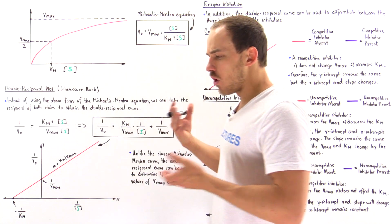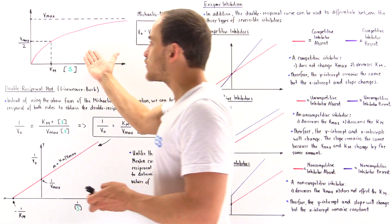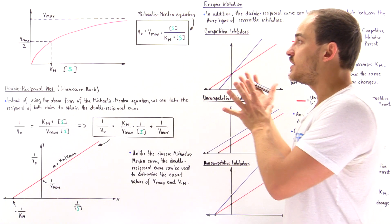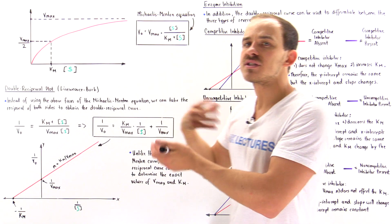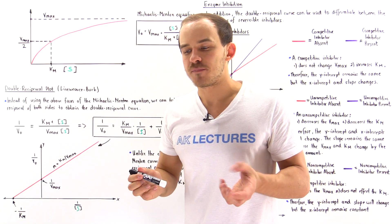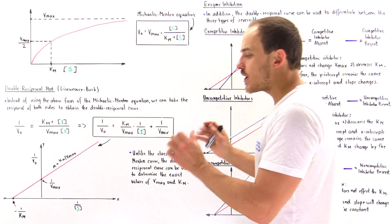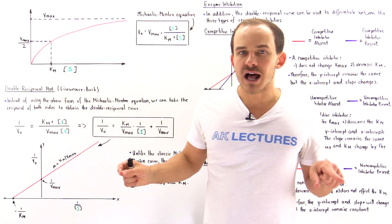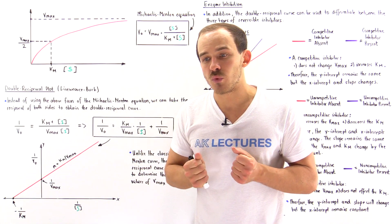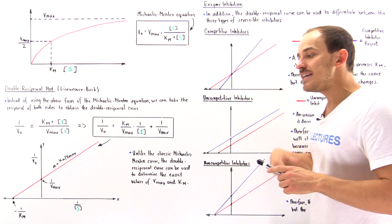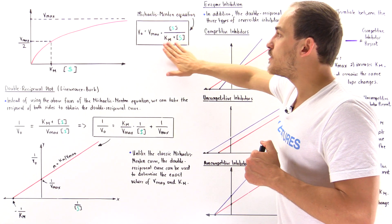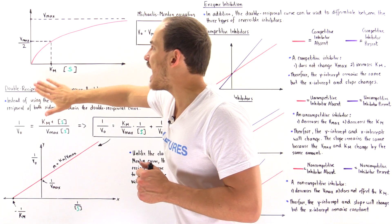Back in the day before computers, there was no way to use this graph to actually calculate Vmax and Km. So instead of using the Michaelis-Menten equation in its original form, we changed the equation into a slightly different form by taking the reciprocal of both the left and right sides. In mathematics, changing both sides of an equation the same way doesn't change the information the equation provides, but it changes the way that information is displayed. This particular equation gives us an asymptotic curve, but taking the reciprocal of both sides gives us a linear equation.